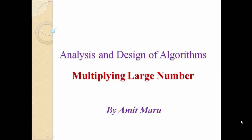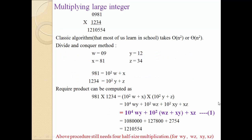Suppose we have two integer numbers: 981 and 1234. In the classic algorithm that most of us learned in school, we multiply one digit with all four digits, then the next digit with all four digits, and so on. The total number of multiplications is 16, because every digit multiplies with every other digit. If n is the number of digits and n equals 4, then the classic algorithm requires 16 multiplications.